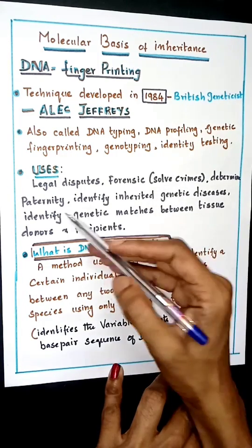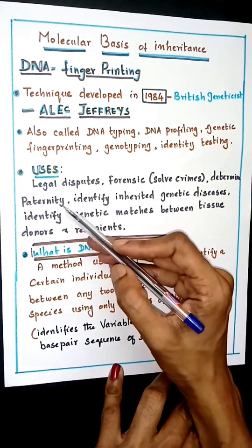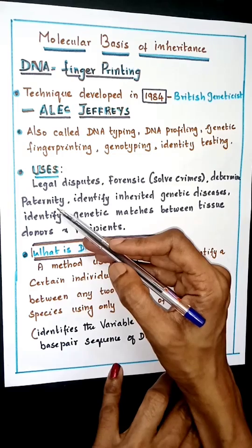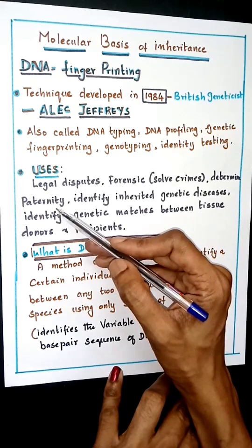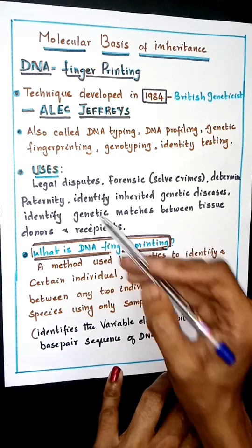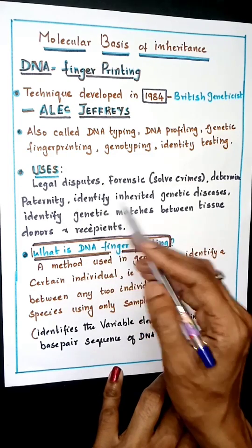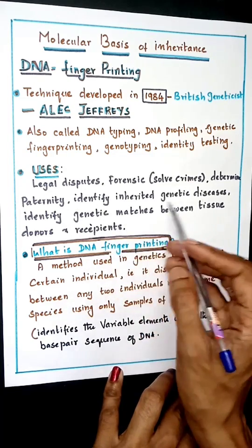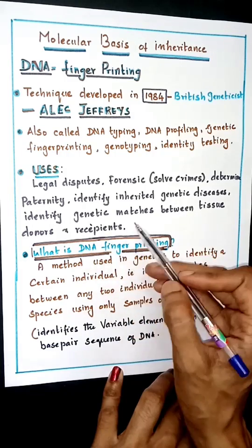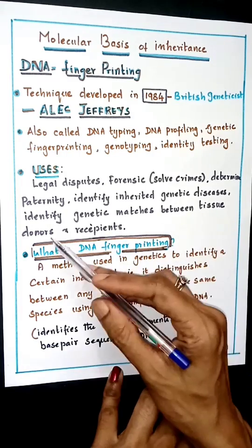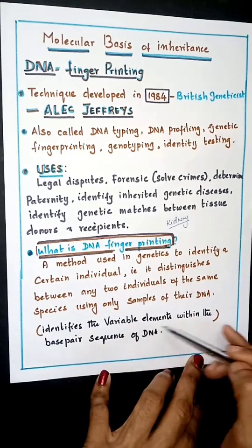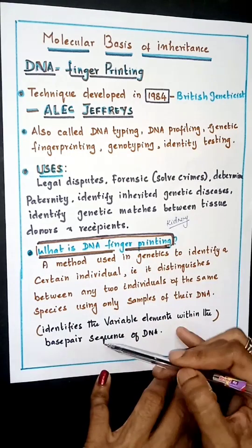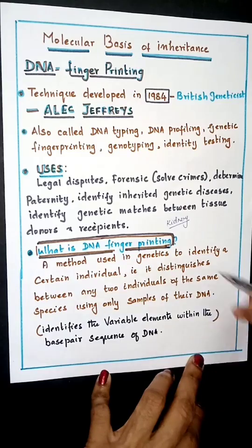DNA fingerprinting is also used to determine paternity — identifying the parents of a child in cases of parental disputes — and to identify inherited genetic diseases, genetic matches between tissue donors and recipients, and variable elements within the base pair sequence of DNA. For example...